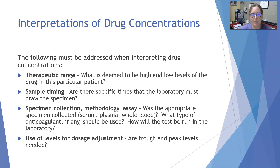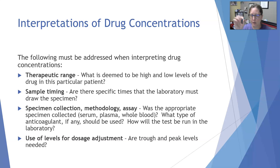Specimen collection methodology and assays: was the appropriate specimen collected — serum, plasma, or whole blood? What type of anticoagulant, if any, should be used? Do we use no anticoagulant because it interferes with the assay, and therefore do serum, or do we use lithium heparin? There are also gel serum separator tubes — some drugs can get trapped in the gel, so you cannot use a serum separator tube for those specific drugs. It is really important to pay attention to the collection label, as it will always indicate the correct tube needed.